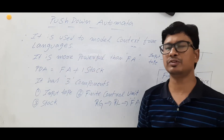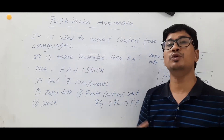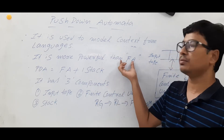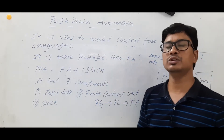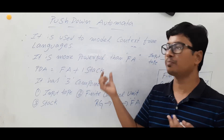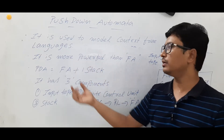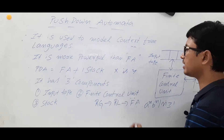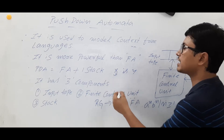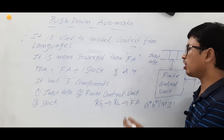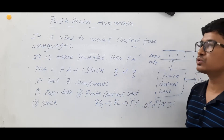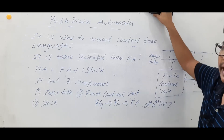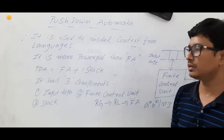Pushdown automata is more powerful than finite automata. What is meant by more powerful? The pushdown automata accepts more number of languages, or it can model more number of languages as compared to the finite automata. In TOC, whenever you hear the word 'powerful,' the meaning is that if X is more powerful than Y, then X can model more number of languages as compared to Y. So pushdown automata can model or accept more number of languages as compared to the finite automata.